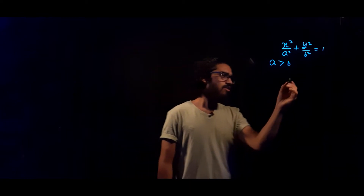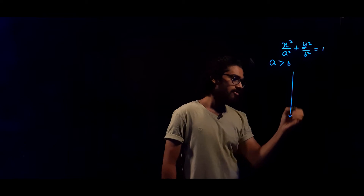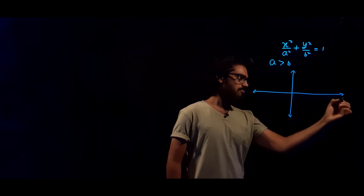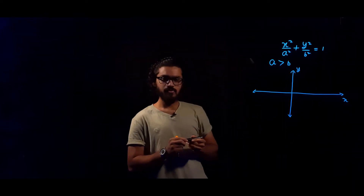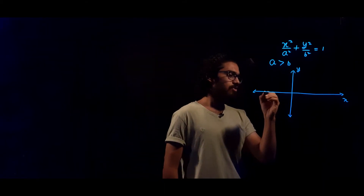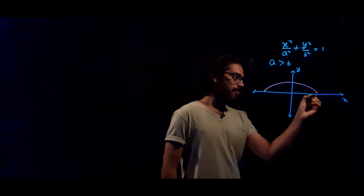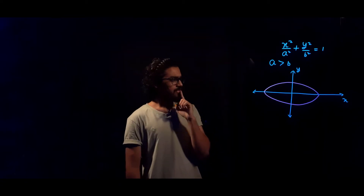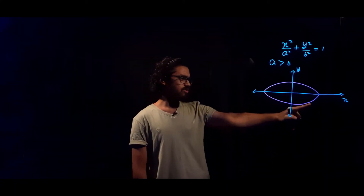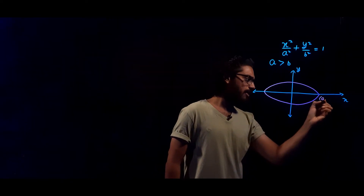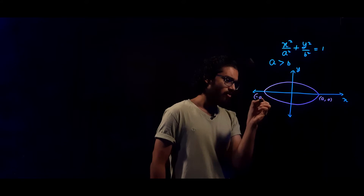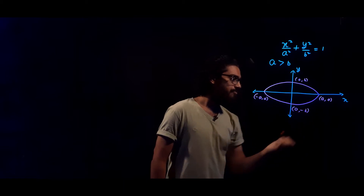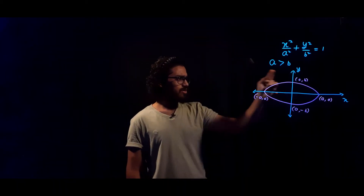In this case your ellipse will be a horizontal ellipse. I'll draw a diagram — this is the y-axis and this is the x-axis. The ellipse looks like this — a horizontal ellipse. The coordinates are (a, 0), (−a, 0), (0, b), and (0, −b).